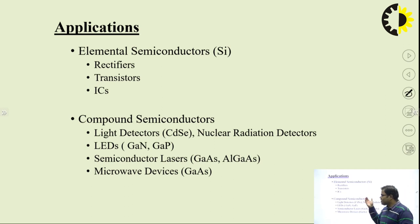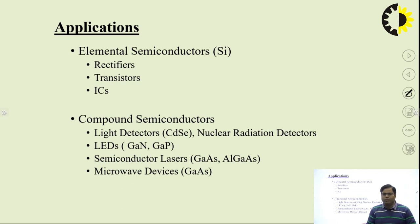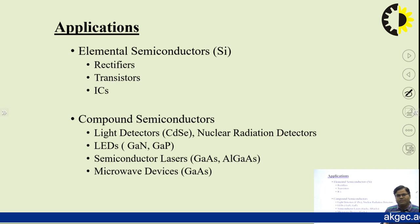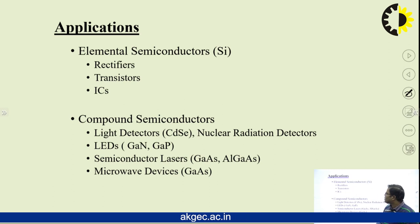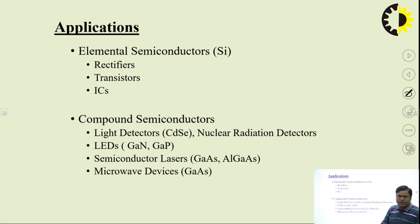Elemental semiconductors are used in rectifiers, transistors, and ICs. Today we use many memories like RAM and ROM. RAM, or random access memory, is made from latches which are made from transistors, and these transistors are made from elemental semiconductors — either silicon or germanium. So elemental semiconductors can be used as rectifiers, in transistors, and in ICs.